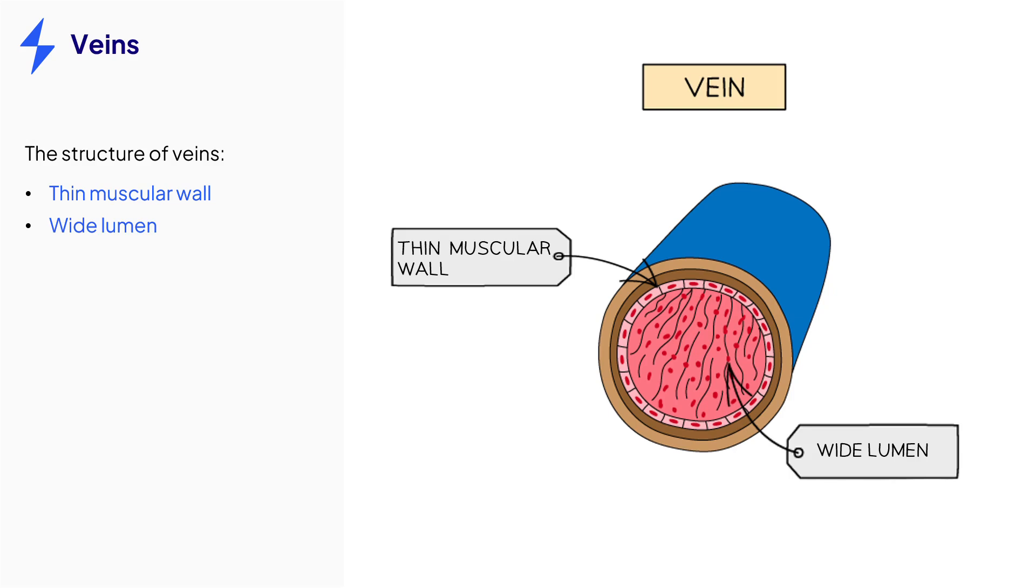In addition to these structures, veins also have valves present. This is to stop the backflow of blood, which is more likely in veins due to the low pressure of the blood inside. In an exam, you may be given images of arteries and veins and asked to identify them or compare their structures.